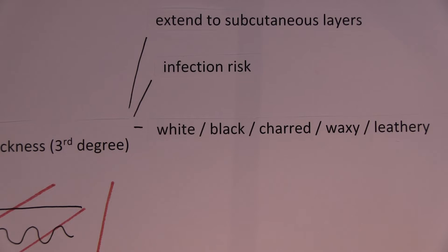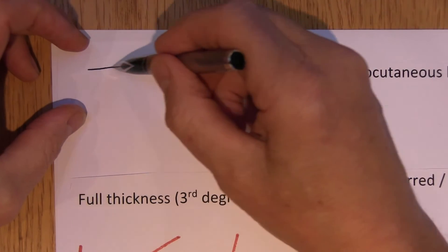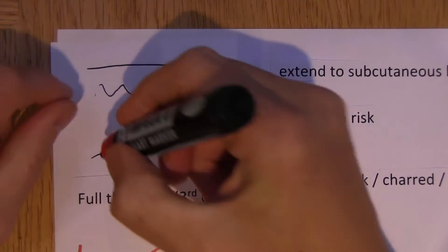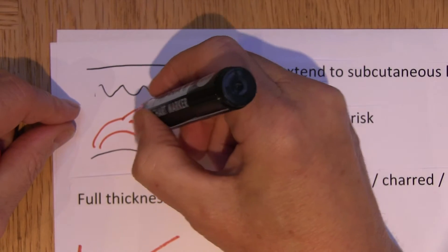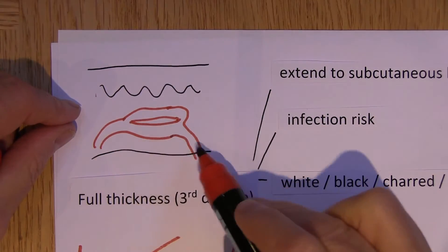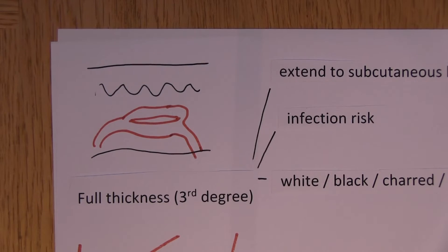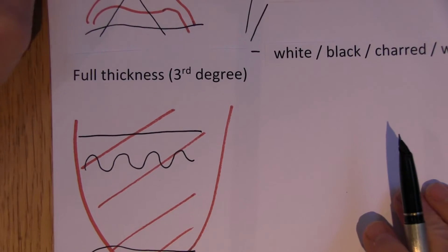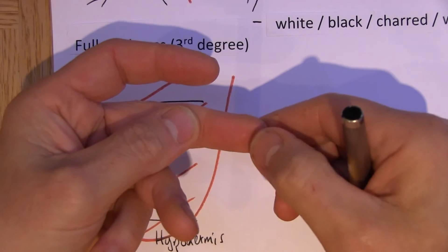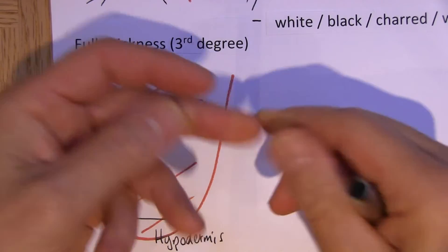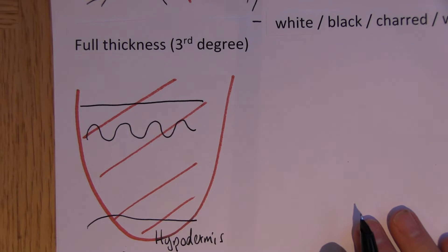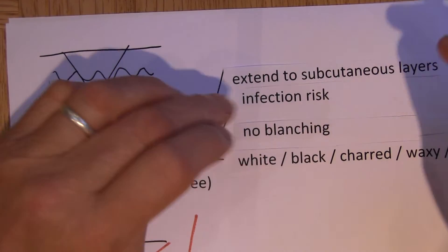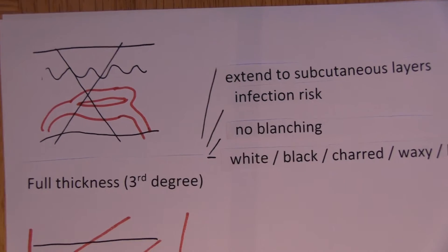The blood vessels are in the dermis — the arterial capillaries and venules — but all of those are burnt away and no longer exist in the burnt areas. So there's going to be no blanching. When you press, you don't get any reperfusion, because that reperfusion comes from the vasculature in the dermis, and the dermis is gone. So no blanching, indicating full thickness injury.